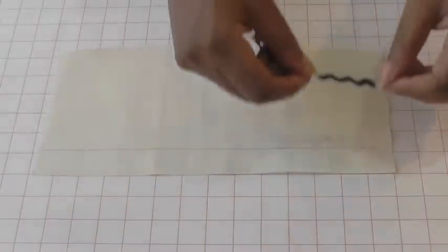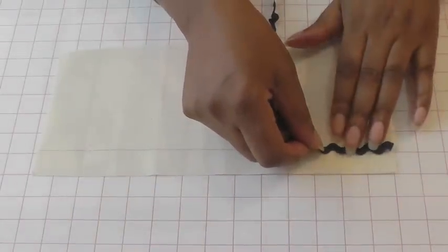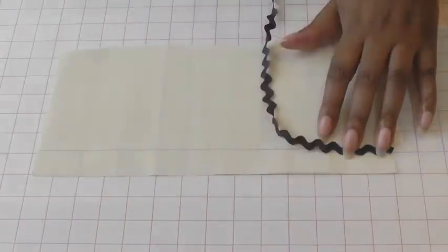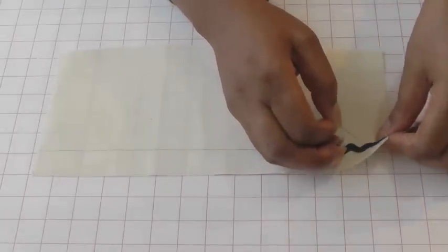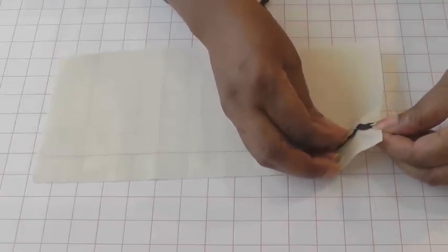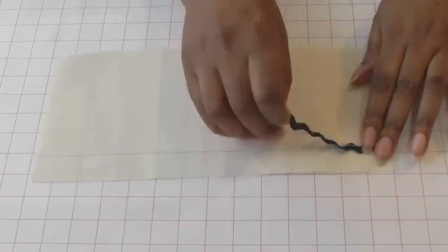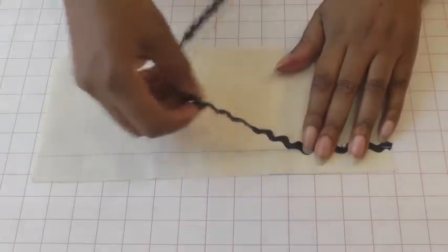Place your rickrack onto the guideline but make sure that guideline is covered and place just one pin to help guide you as you sew. You don't need to pin all the way along because you've got your guideline and that will enable you to keep your rickrack straight as you sew.